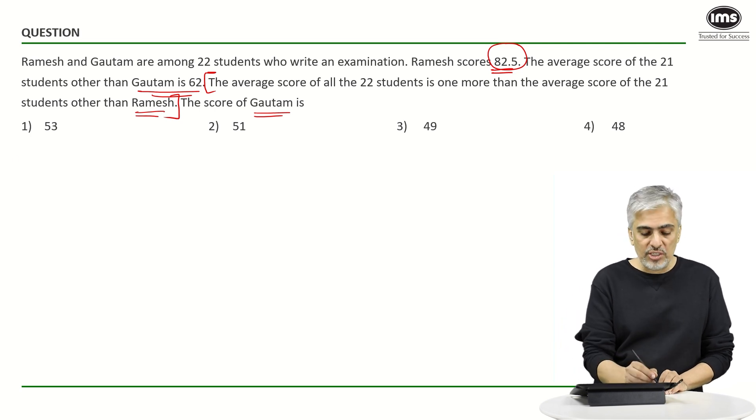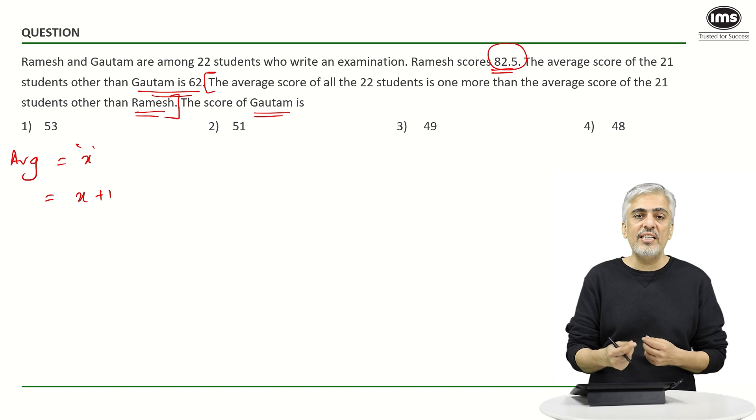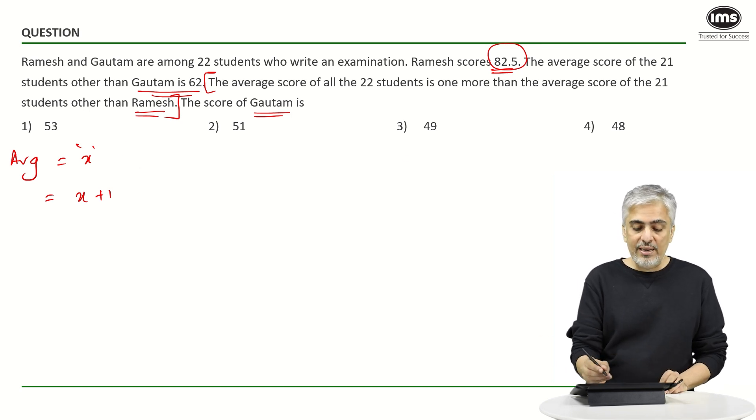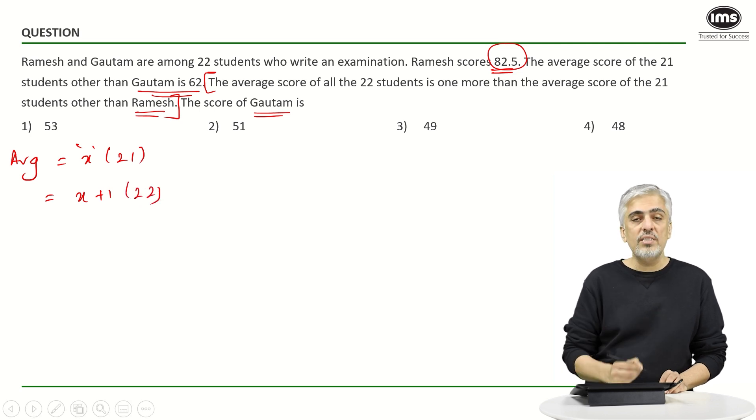Which means including Ramesh the new average will become x plus one, and the difference between these two totals will give me Ramesh's score. So when I say without Ramesh, which means there were 21 students, and including Ramesh there are 22 students.